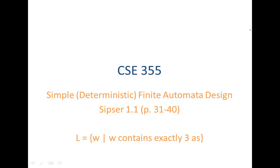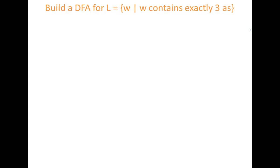Let's continue with examples from the material in CPSIR 1.1. So let's look at the language L, which is the set of strings W such that W contains exactly three A's. So we're looking at all strings that contain three A's — not two A's, not four A's, three A's. So what we want to do is build a DFA for L, where L is the set of strings that contain exactly three A's. We're going to continue with sigma equal AB.